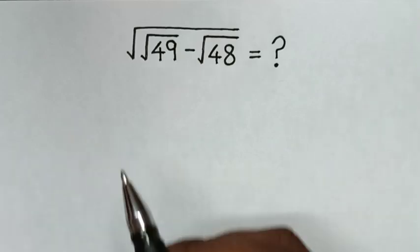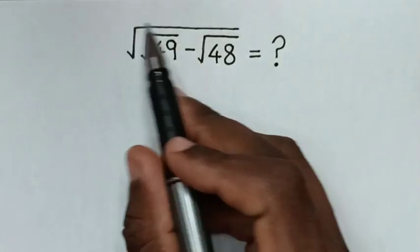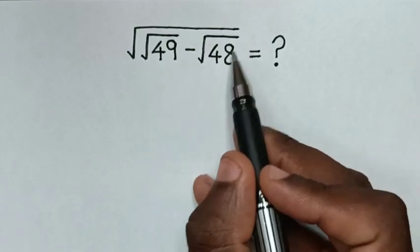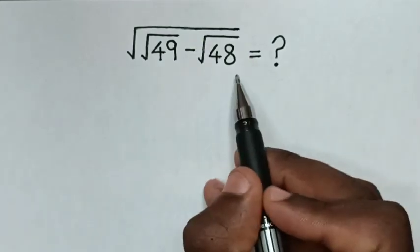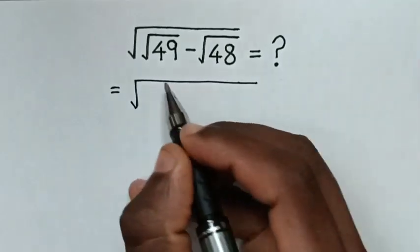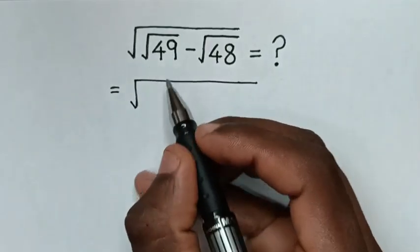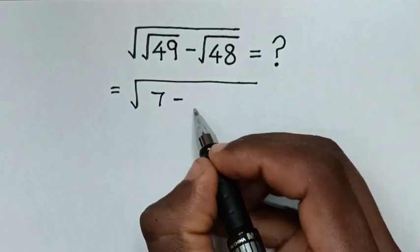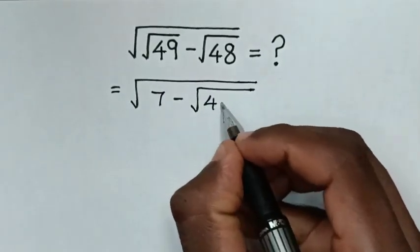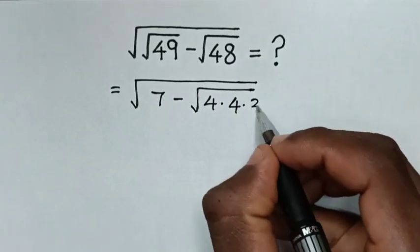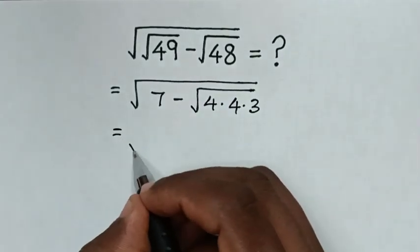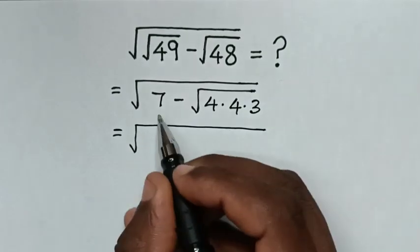Hello. How to solve square root of square root of 49 minus square root of 48? So this expression is equal to square root of: square root of 49 is the same as 7, minus square root of 48, which is the same as 4 times 4 times 3.